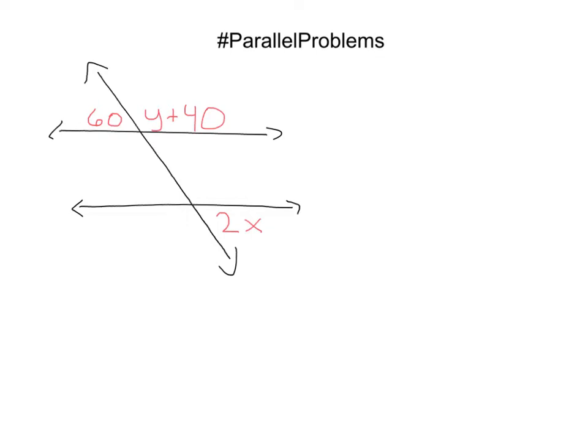So from there, I can say, all right, well, I know 60 plus y plus 40 equals 180 because linear pairs are supplementary. If I go ahead and solve that, I'm going to get y equals 80.